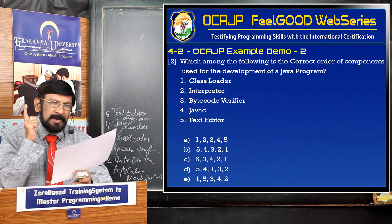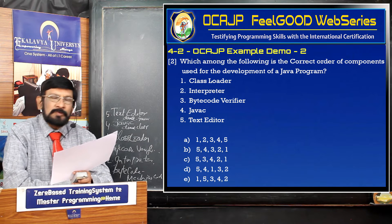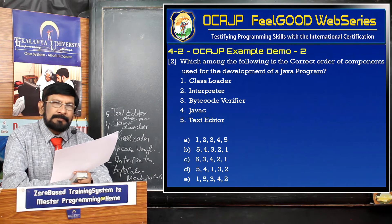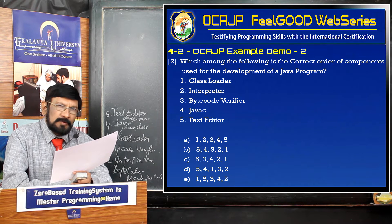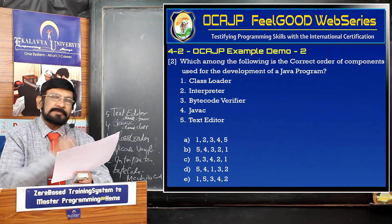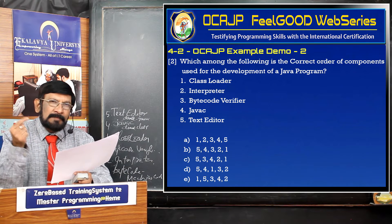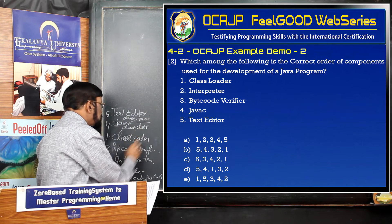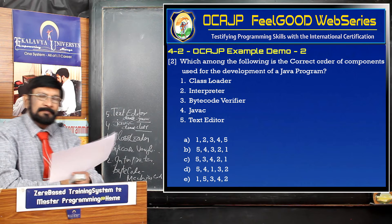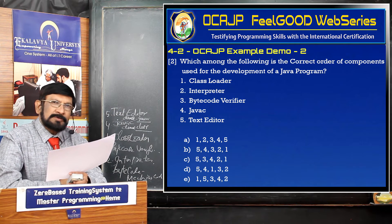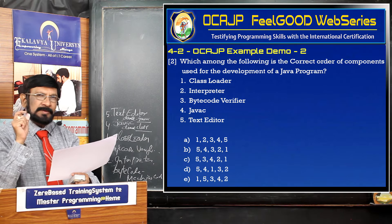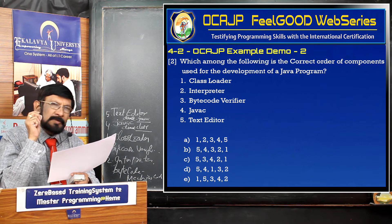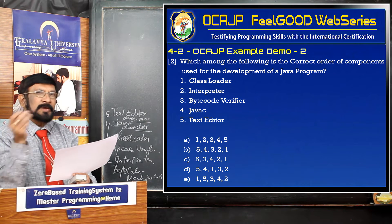Once again I explain, because this is a very core concept. First, you type your program using the text editor - text editor is the fifth one. Once the text editor is done and your program is correct, then the Java compiler compiles it. As a result, a dot java program is transformed into a dot class program. This consists of bytecode - it is a separate file - and that should be loaded.